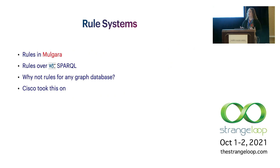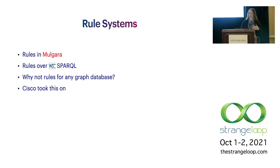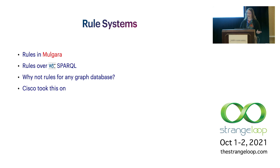My first rule system was built into Mulgara, but then I moved into a commercial project that worked on any RDF database through the SPARQL interface. That worked so well that it occurred to me I could apply this to any graph database if I had an API adapter. So I started doing that as an open source hobby, but shortly after I started at Cisco, I showed my boss and he was very enthusiastic, giving me the go-ahead to continue doing open source work on company time.